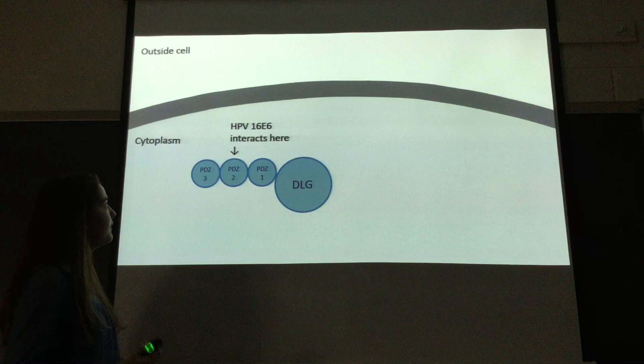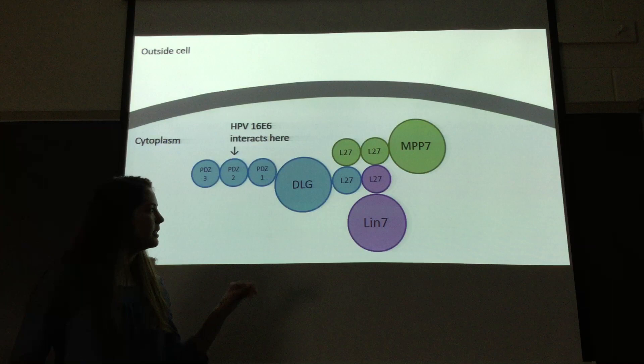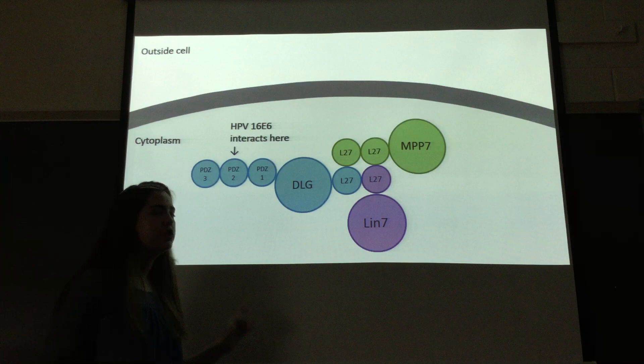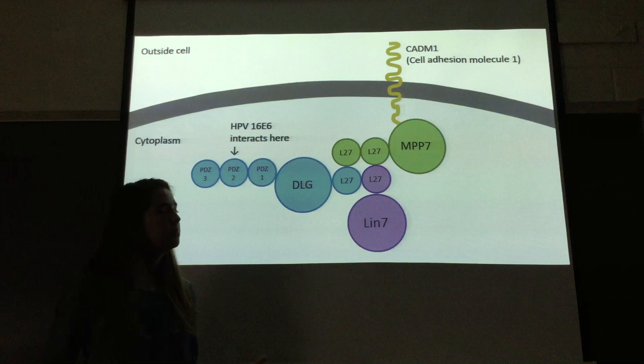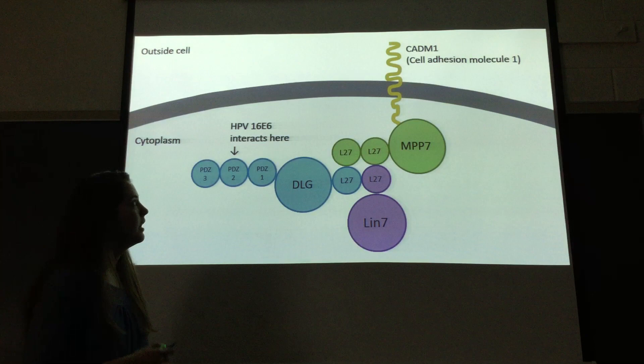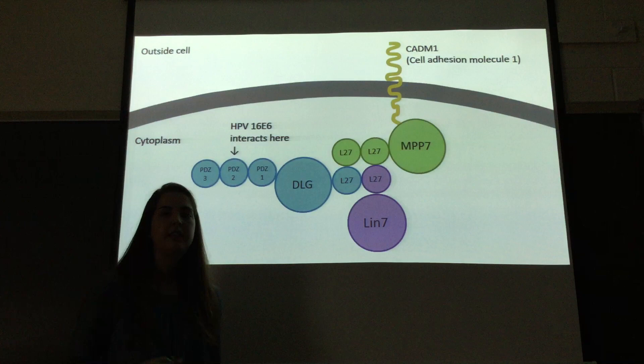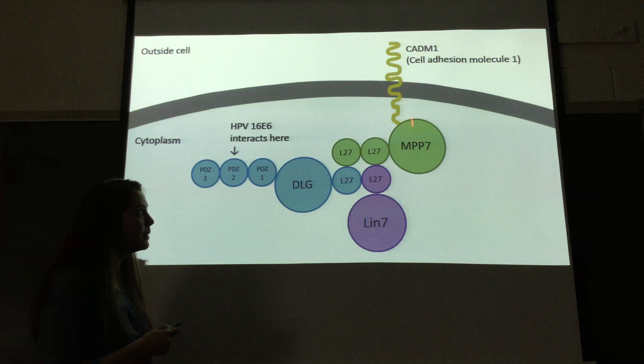They found that the HPV virus can interact with a PDZ domain that then binds a protein called DLG. DLG can then bind, in a three-part complex, the proteins MPP7 and LIN-7, and this occurs in a LIN-7 dependent fashion — meaning DLG can only bind MPP7 when LIN-7 is present. MPP7 can then bind a transmembrane protein called CATM1, or cell adhesion molecule 1, and this protein is the whole reason my lab was interested in this complex.